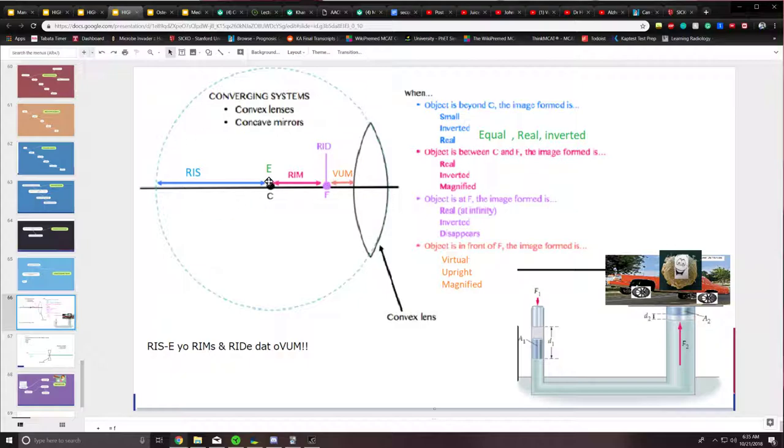This is going to tell us the details that we need to know if an object is placed at a specific area of this image. So if an object is placed in this blue section, which is beyond C, it's going to be real, inverted, and small.